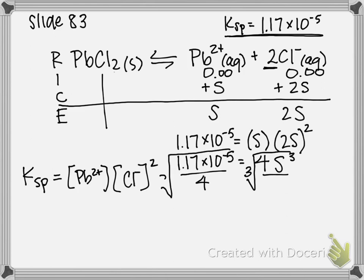So not the square root, but the cubed root. So if I take the cubed root of 1.17 times 10 to the negative 5, divided by 4, I'm going to get that my S is equal to 1.43 times 10 to the negative 2.